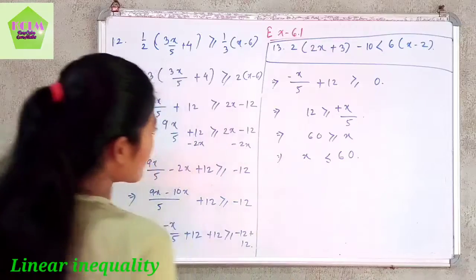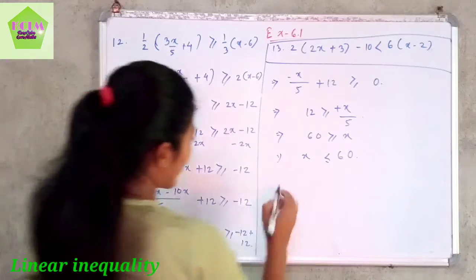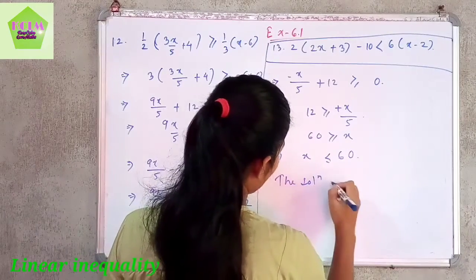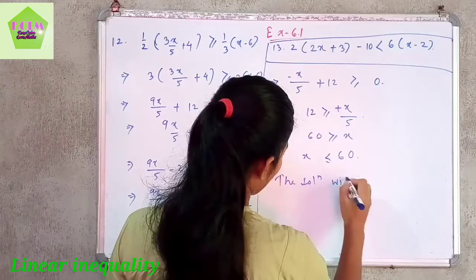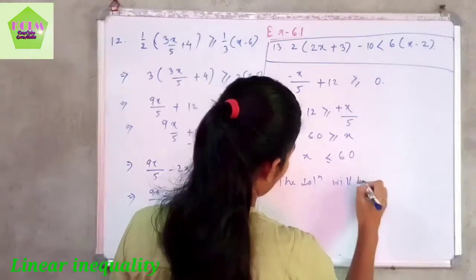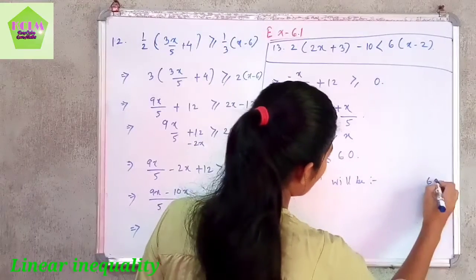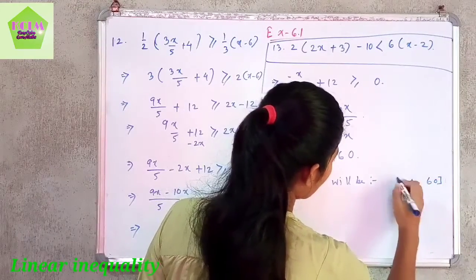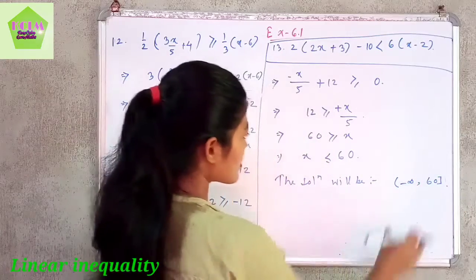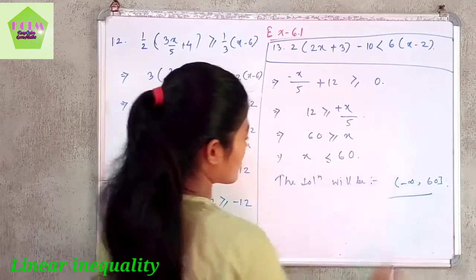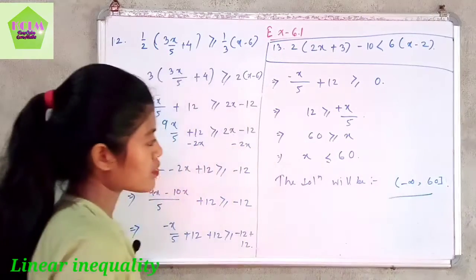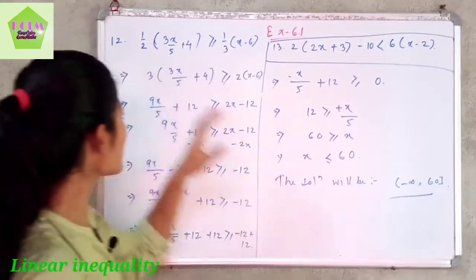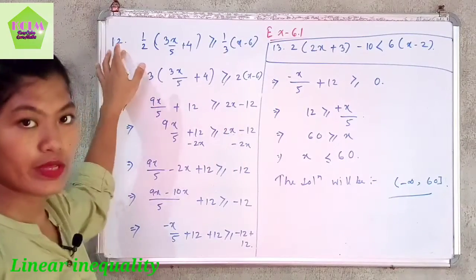For real value of x, the solution will be the open-closed interval minus infinity to 60, written as minus infinity comma 60 with a closed bracket at 60. This is the solution for this linear inequality.